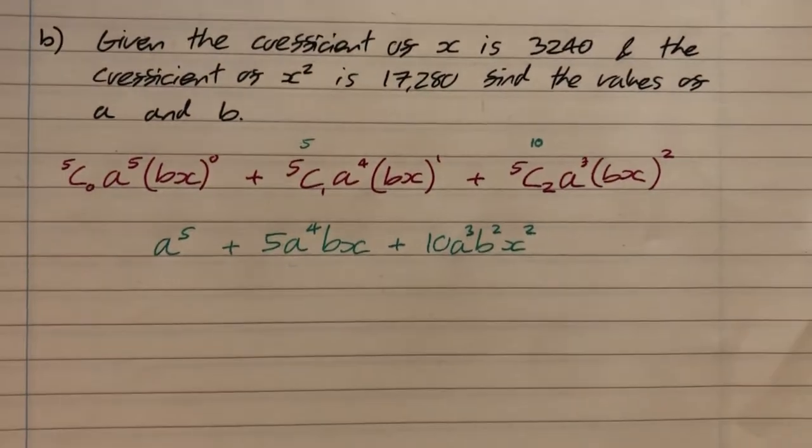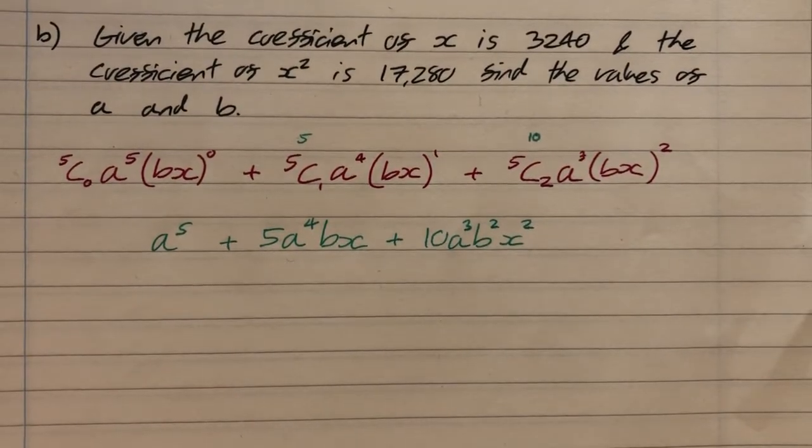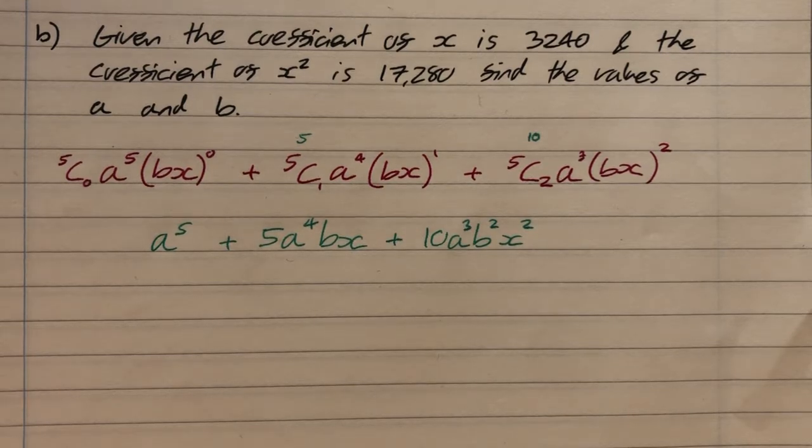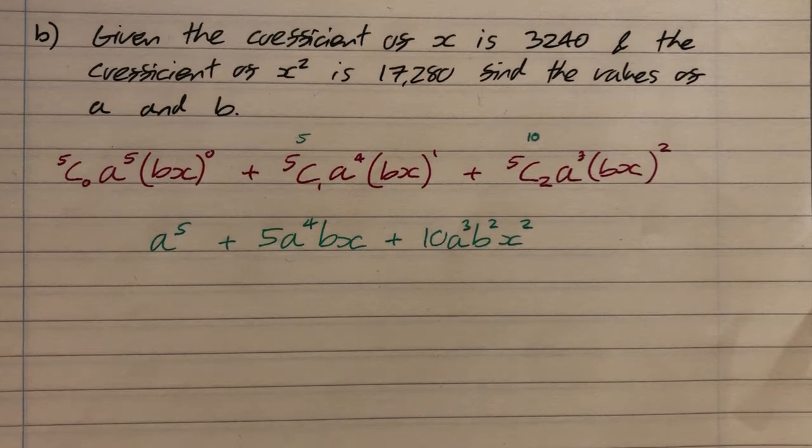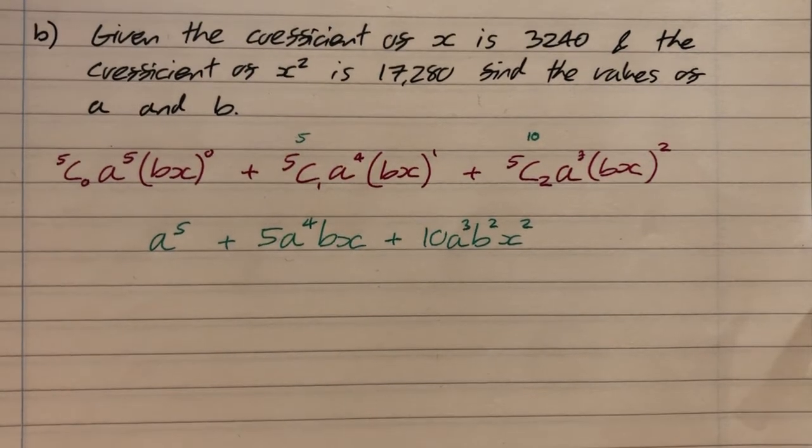Part b. Given that the coefficient of x is 3240 and the coefficient of x squared is 17,280, find the values of a and b. What we're going to be doing now is we're equating the two bits of information we've been given to give us a pair of simultaneous equations in a and b.